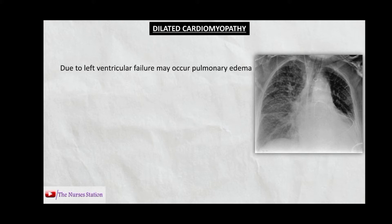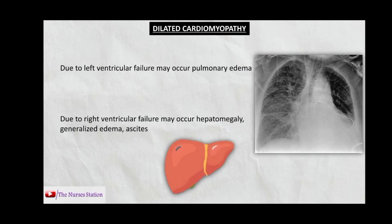Since the left atrium receives blood from the pulmonary veins, the pressure in the pulmonary veins also increases, which ultimately increases the pressure in the pulmonary capillaries. Since capillaries are the most permeable blood vessels in the body, the increased pressure causes fluid to leak into the pulmonary interstitium, leading to pulmonary edema. Due to right ventricular heart failure, pressure increases in the right atrium, then in the superior and inferior vena cava, leading to hepatomegaly, generalized edema (anasarca), and ascites — the accumulation of fluid in the peritoneal cavity.